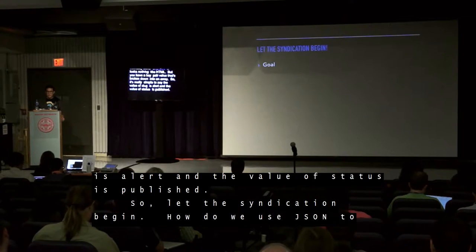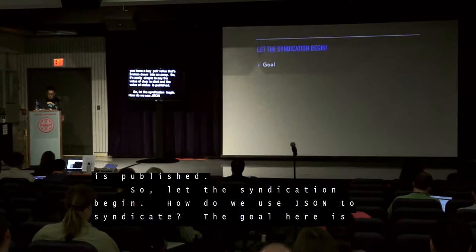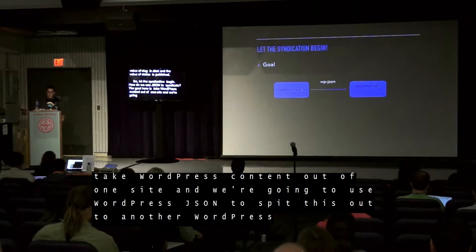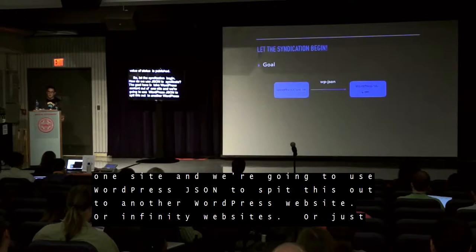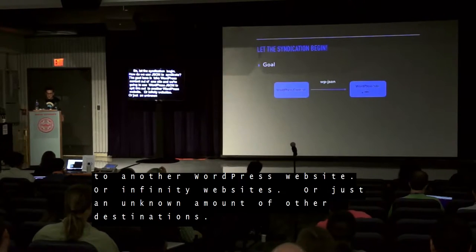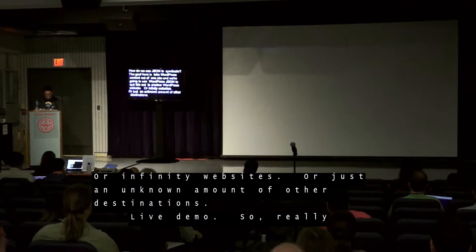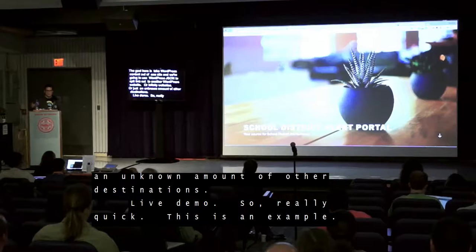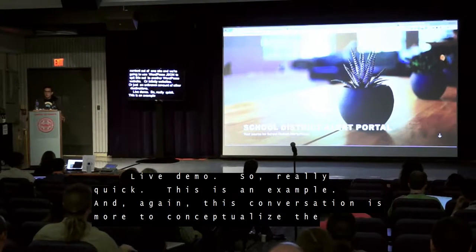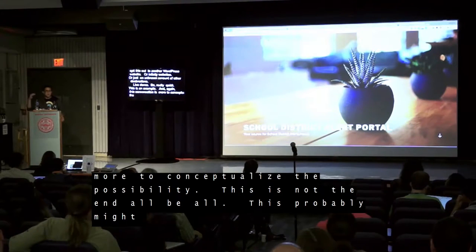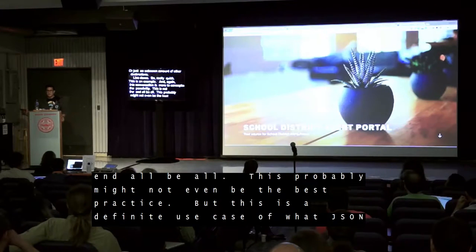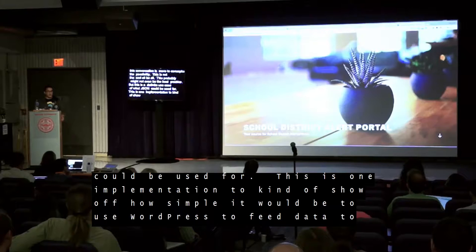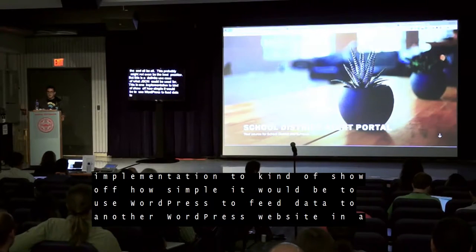So let the syndication begin. How do we use JSON to syndicate? The goal here is to take WordPress content out of one site and use WordPress JSON to send it out to another WordPress website — or infinity websites, or just an unknown number of other destinations. This conversation is more to conceptualize the possibility. This is not the end-all be-all and might not even be best practice, but this is a definite use case of what JSON could be used for — one implementation to show how simple it would be to feed data to another WordPress website.